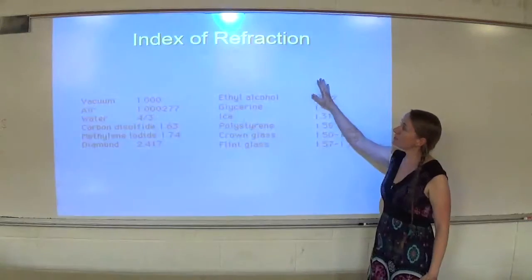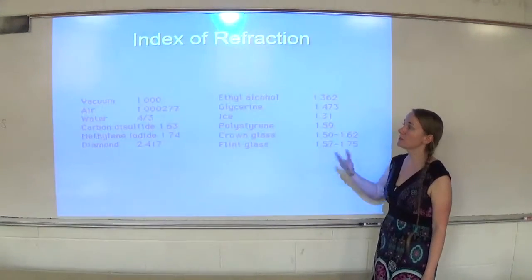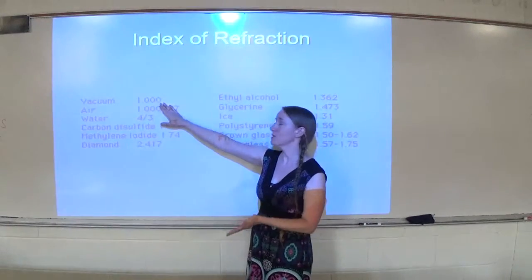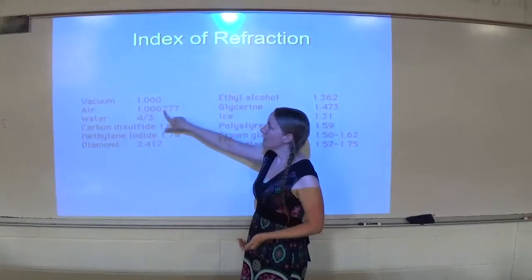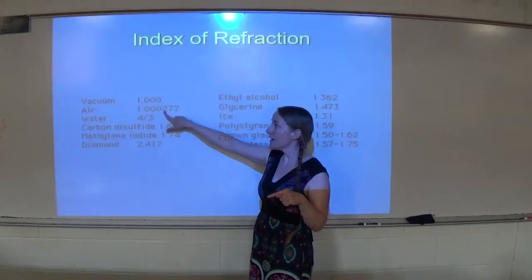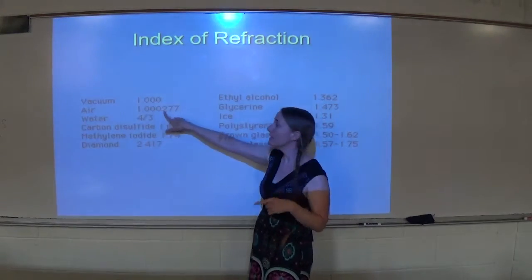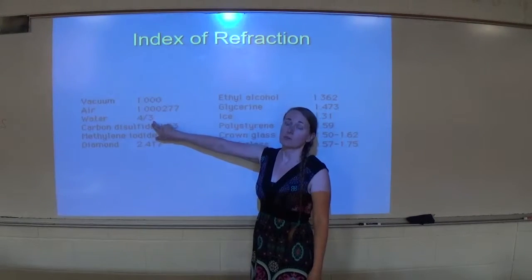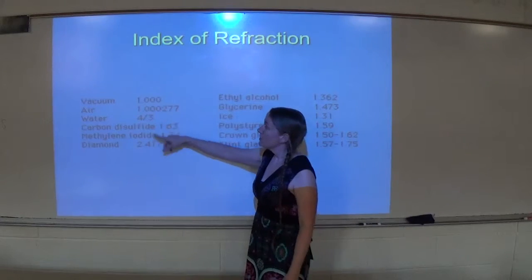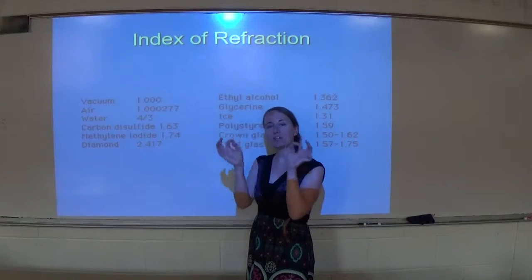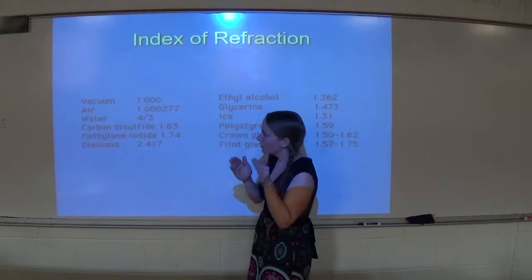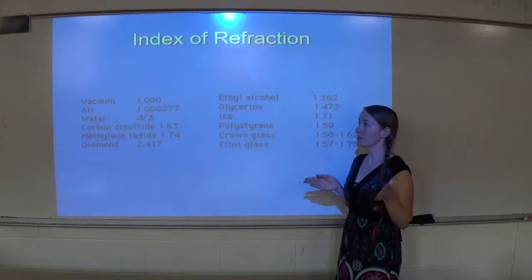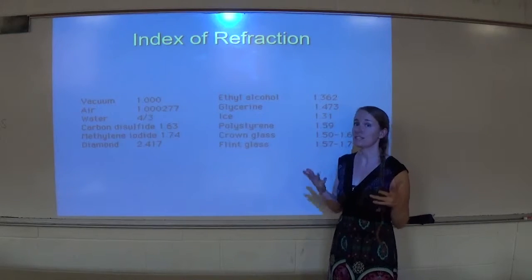Here's a list of the index of refraction for different materials. In a vacuum it's 1, because it's the ratio of light in a vacuum to light in that medium. In air it's almost 1, so air bends light very little compared to a vacuum. Water is about 4/3, or 1.3, which is why objects in water can look broken or larger. Diamond is 2.417, which is why we like diamonds — they bend light a lot, causing that sparkling appearance.